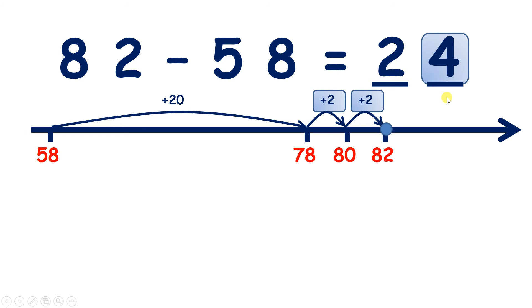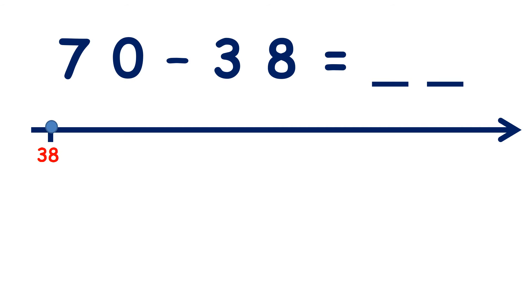Now 70 minus 38. Pause the video and see if you can find the difference by counting forwards, that's in tens then units. So counting on in tens we have 48, 58, 68. And 78 would be too many, so we stop at three tens.